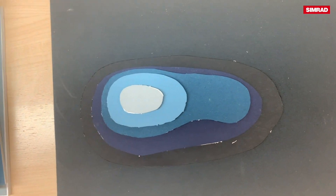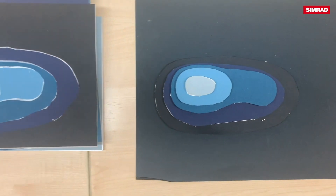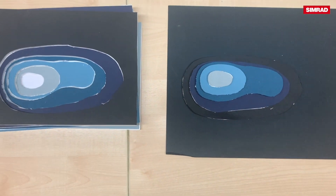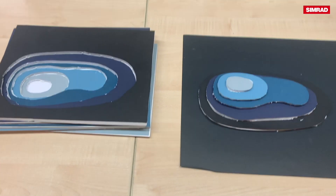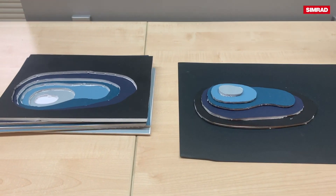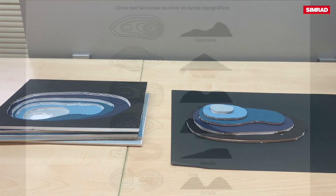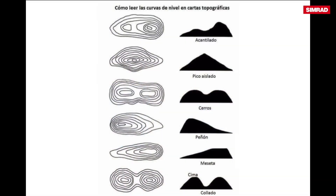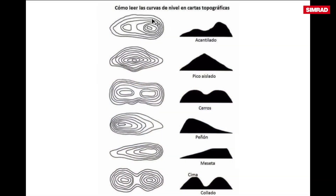This is a key idea, which we have to understand fundamentally and can't be completely understood only with photography and bathymetry. This is a clear example which teaches us how to identify structures like cliffs, crags, hills, and plateaus.